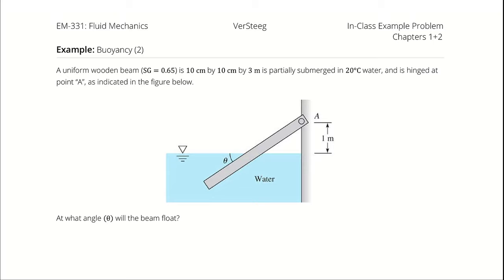A uniform wooden beam with a specific gravity of 0.65 is 10 centimeters by 10 centimeters by 3 meters, is partially submerged in 20 degrees Celsius water, and is hinged at point A as indicated in the figure below. At what angle theta will the beam float?